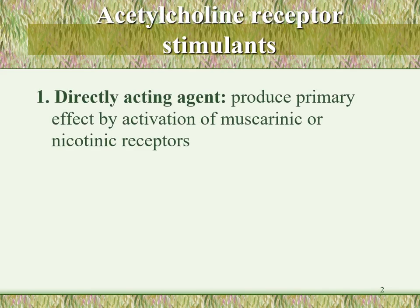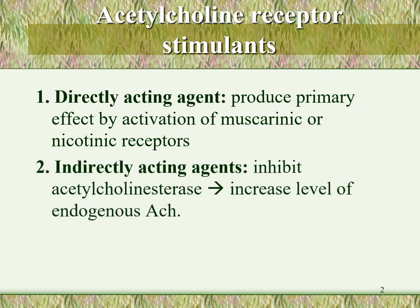Acetylcholine receptor stimulants can be divided into directly acting agents, which produce direct activation of muscarinic and/or nicotinic receptors just like acetylcholine, and indirectly acting agents. Indirect agents inhibit the enzyme cholinesterase, leading to an increase in the level of endogenous acetylcholine by inhibiting its degradation. This indirectly leads to increased acetylcholine levels, so they are called indirectly acting agents.